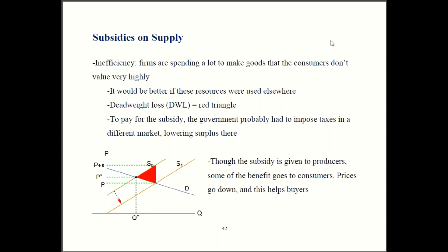We saw taxes create inefficiency — they create deadweight loss — because there are some trades that would have benefited both consumers and producers but don't take place because of the tax. Subsidies also create deadweight loss, though the mechanism is different. What happens is that trades end up occurring that should not have happened.